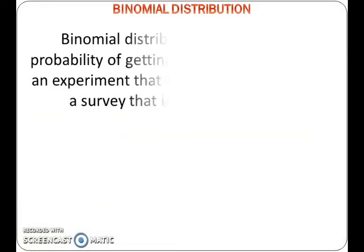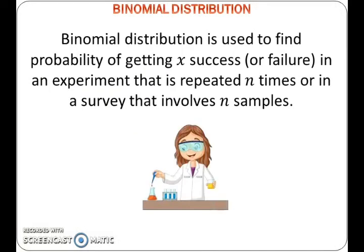Binomial distribution is used to find the probability of getting X successes in an experiment that is repeated N times, or in a survey that involves N samples.